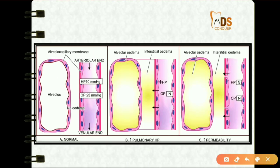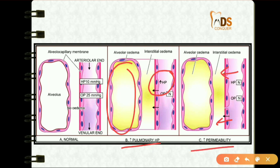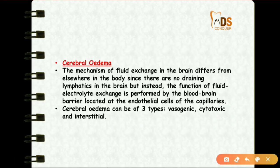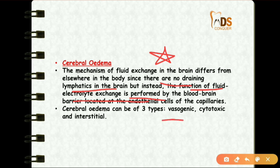The pathogenesis of pulmonary edema involves increased pulmonary hydrostatic pressure and increased permeability, which together produce alveolar edema. In cerebral edema, the mechanism differs because there are no draining lymphatics in the brain; fluid-electrolyte exchange is performed by the blood-brain barrier. Cerebral edema may be vasogenic, cytotoxic, or interstitial in type.